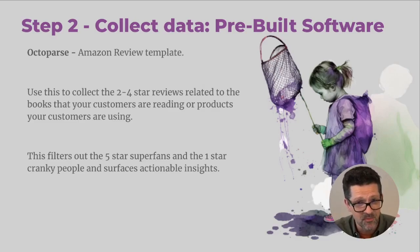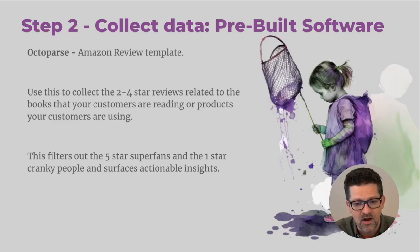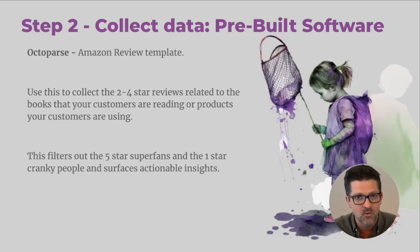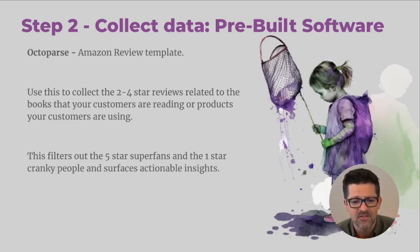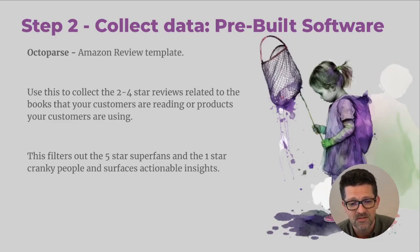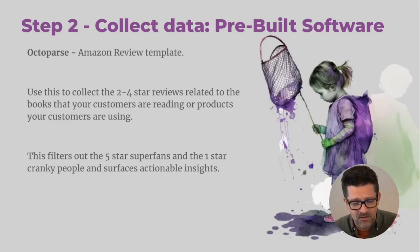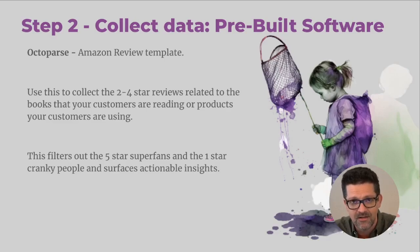That Octoparse Amazon review template is pretty powerful and might be a great way to get started — using it to collect the two-to-four-star reviews related to the books or products that your customers are using. Remember, just a couple of steps ago we asked ChatGPT to list out the related books or products that your audience may be interested in. Now we're going to filter those using Octoparse and grab just the two-to-four-star reviews. This filters out the five-star super fans and the one-star cranky people, and surfaces actionable insights — people saying 'I was hoping this book would cover X, Y, Z' — giving you their exact words describing their pain points to use in all of your marketing.